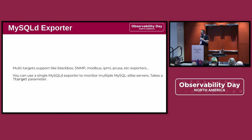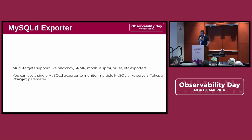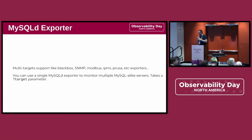MySQL Exporter now supports multiple targets. Pretty much everyone using Prometheus will be using Blackbox exporter, but also things like SNMP exporter, Modbus exporter, IPMI exporter, Prusa exporter — all of those are basically reverse proxies. They're no longer tied to a specific instance of MySQL; you can now just have one instance and query 10,000 different MySQL servers if you so choose. This also means you can use this for any SQL server, basically.